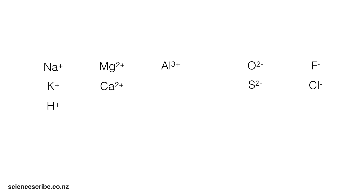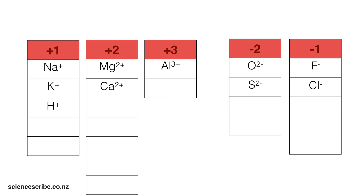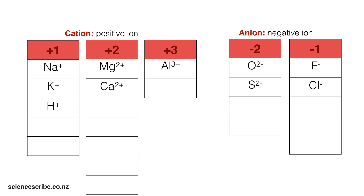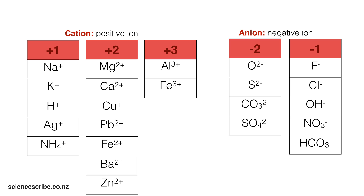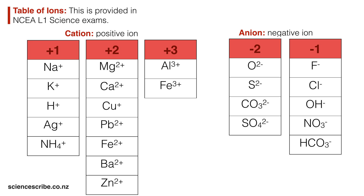Some of the ionic symbols and their formulas from the first 20 elements are shown here. You'll notice that I've sorted them based on their charges and whether they're positive or negative. Positive ions are called cations while negative ions are called anions. You'll also notice a few blank boxes — those are other ions you need to be familiar with in NCEA Level 1. This layout is called the table of ions, and it is given to you in the exam. The bad news is that the names aren't provided, so I'm going to go ahead and give those names to you.